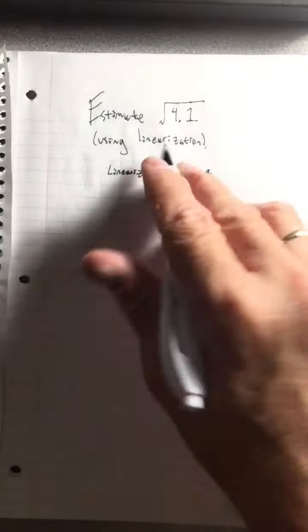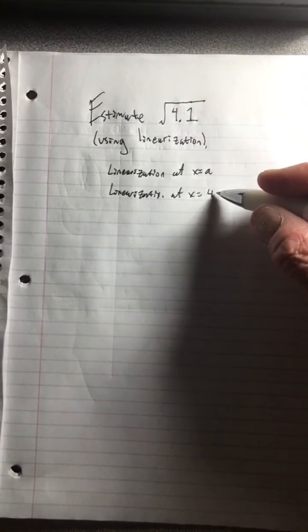Well, in this particular case, we want the linearization at x equals, what do you think? If we're trying to get 4.1, what do you think is a convenient value? You're right, 4. Because we can take the square root of 4 and because it's close to 4.1. So that's what I mean by convenient value.